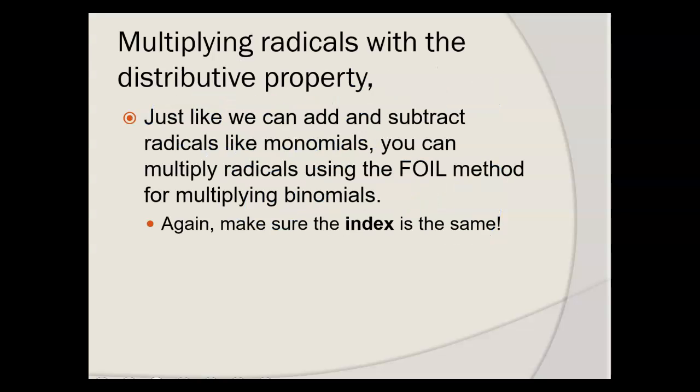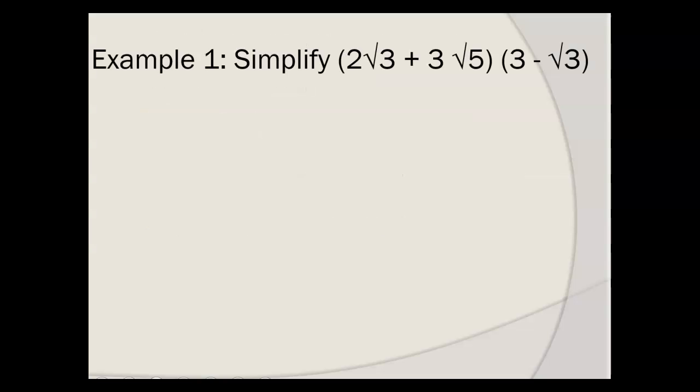So multiply radicals with the distributive property. Just like we can add and subtract radical monomials, you can multiply radicals using the FOIL method. They have to have like terms to multiply them. So you have 2 square roots of 3 plus 3 square roots of 5 times 3 minus the square root of 3.